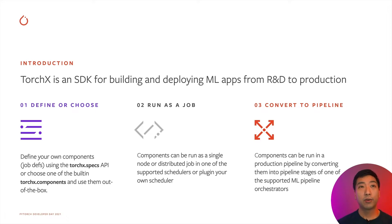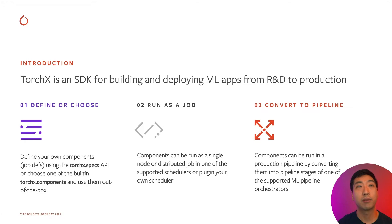Once you've defined or chosen a component, the second step is to see the component in action by running it as a job. We realize that adopting a new technology in production takes development resources, and the good news is that you can get started with TorchX at no added infrastructure setup cost. This is because TorchX works with popular ML schedulers and pipeline orchestrators that are already widely adopted in the industry and deployed in production. So chances are, you're already running a scheduler that TorchX supports.